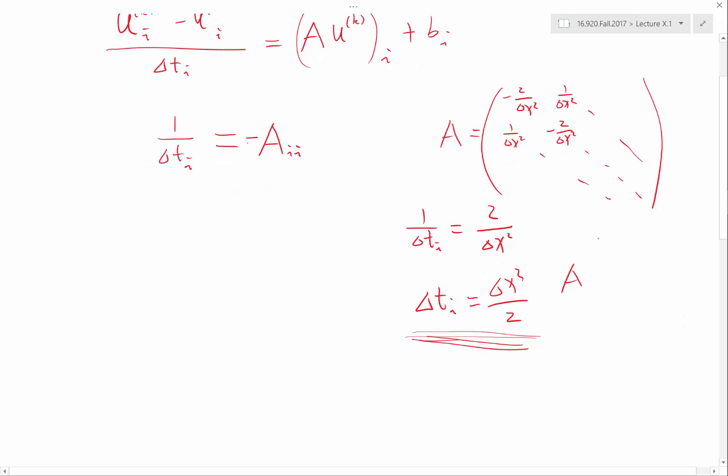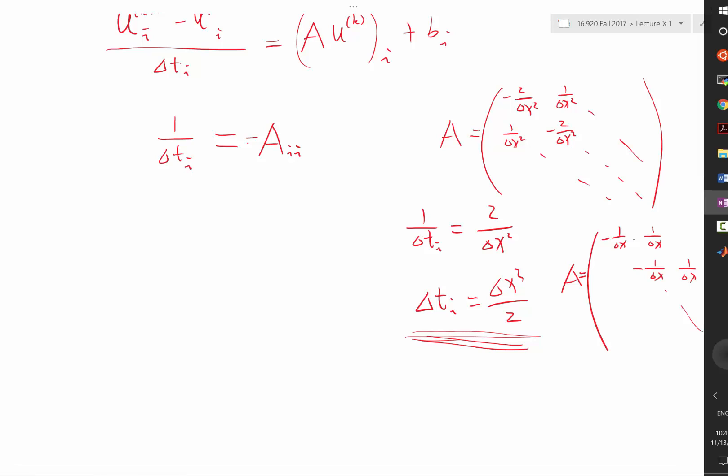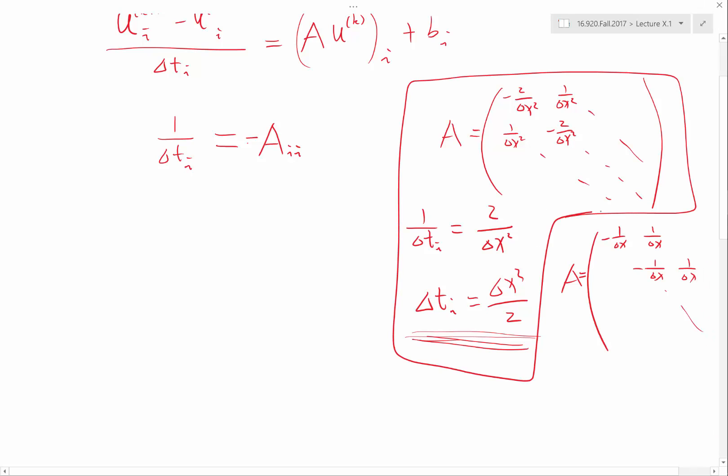Another case is when you have the first order finite difference, where, no, finite difference for solving a first order equation, where you have 1 over delta x minus and 1 over delta x plus on the other side, right? So if you have, this is for discretizing the first order derivative, du dx, then you would have, so this is with this example. For this example, you have 1 over delta t i is going to equal to 1 over delta x, which gives you delta t i equal to delta x.